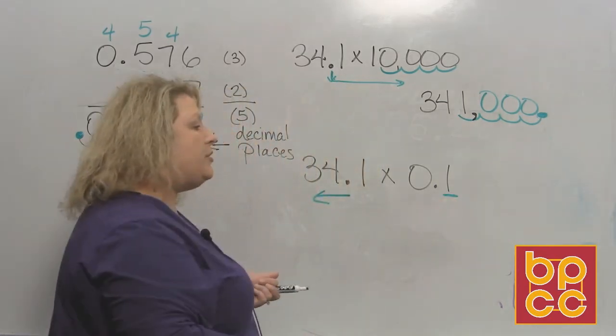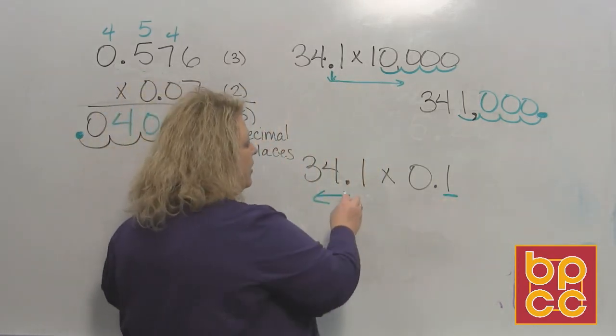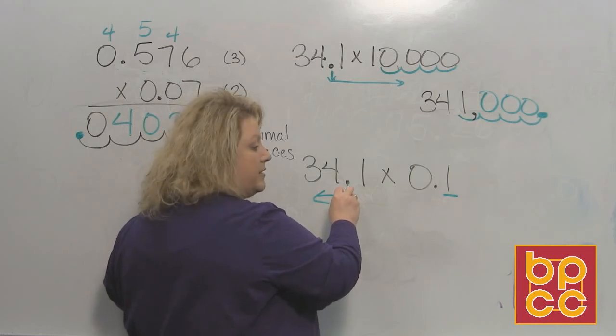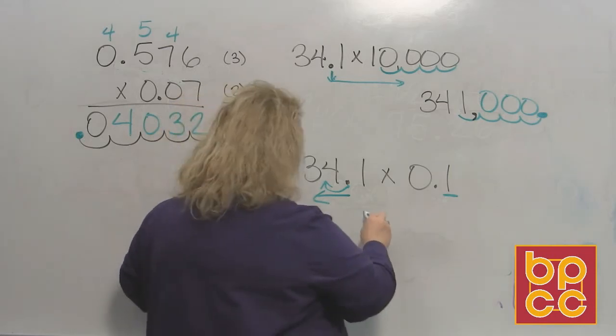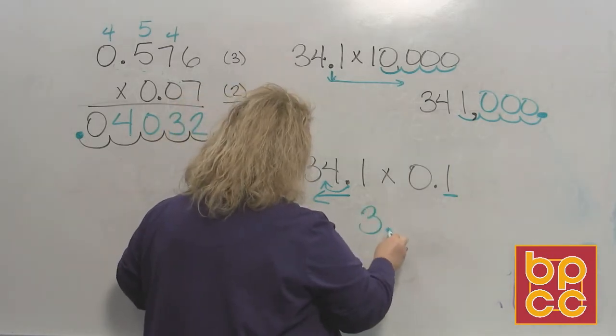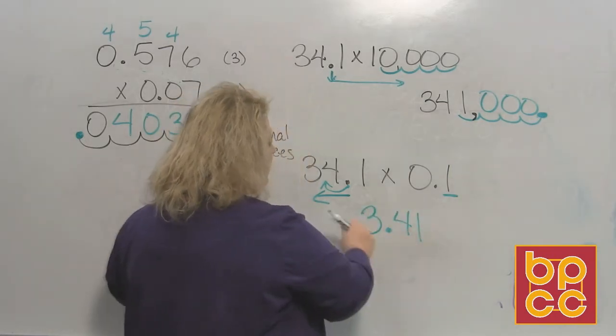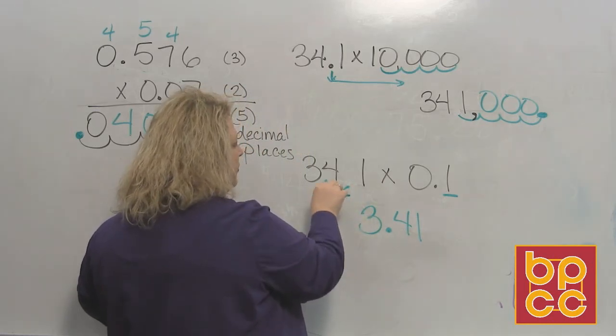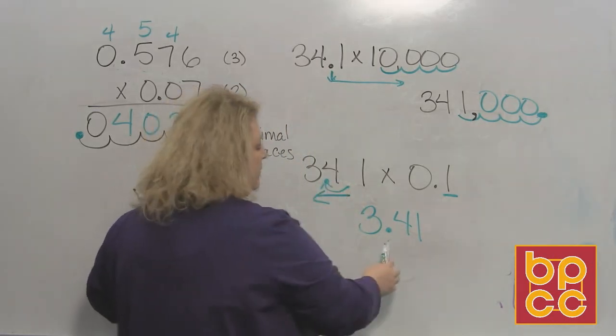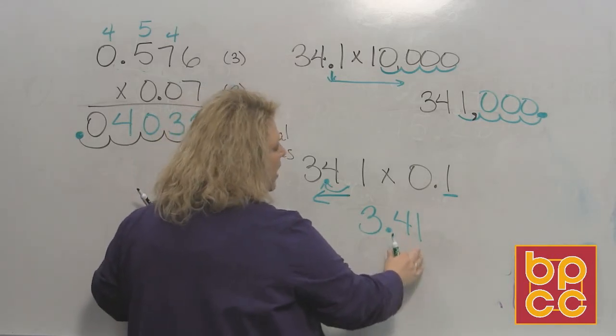you move your decimal point to the left, however many spaces you have behind that decimal. I have one digit behind the decimal, so therefore it's going to move from right here, where it is, move one space to the left. So now my number is 3.41, because the decimal point actually moves from there to the new spot right there. So that is now 3 and 41 hundredths.